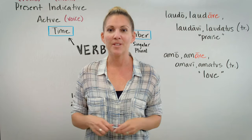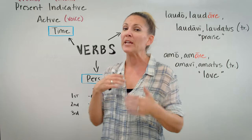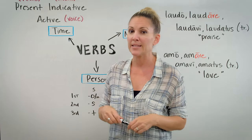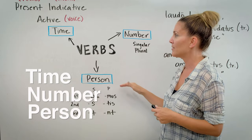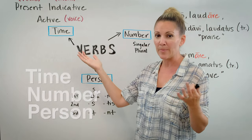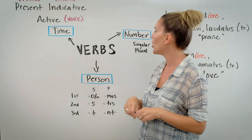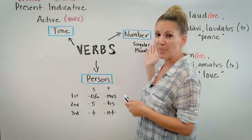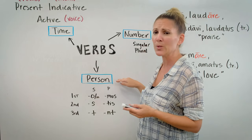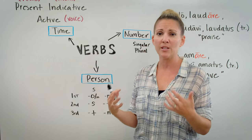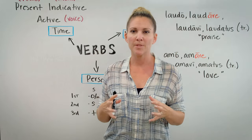Let's talk about verbs. Verbs are the hardest part of any language. They tell us three main things about what's happening in a sentence. They communicate time, number, and person. Time — when is something happening? Is it happening now? Is it happening yesterday? Will it happen tomorrow? The number of people involved — is there one person or more than one? And who's actually performing the action — is it me, is it you, is it them?